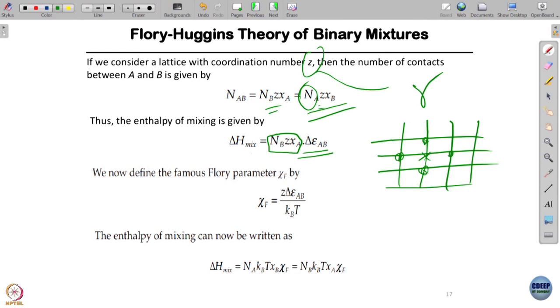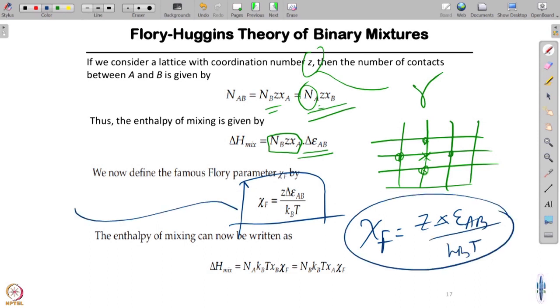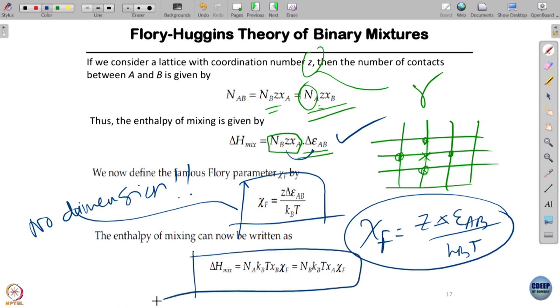Now we add the two, enthalpy and entropy, to get the free energy. Flory defined the following parameter, famous as the Flory parameter: chi_f equals Z times delta epsilon AB divided by kBT. It's a dimensionless quantity. Then we get delta H mixing, rewritten by introducing Z into delta epsilon AB, divide and multiply by kBT.